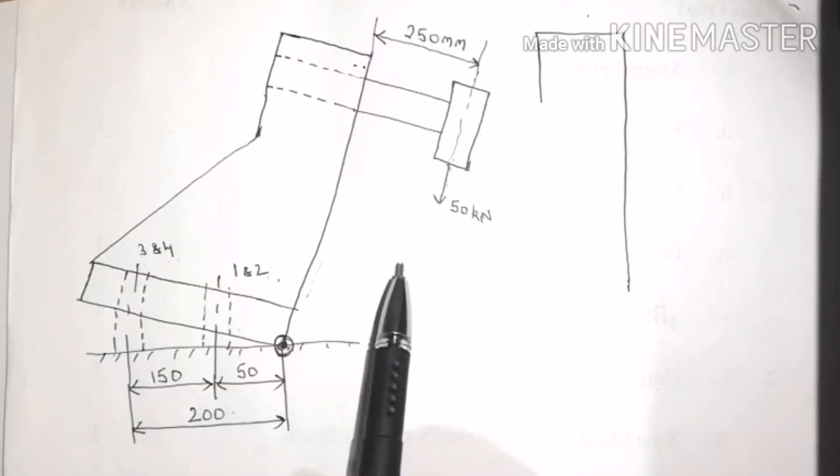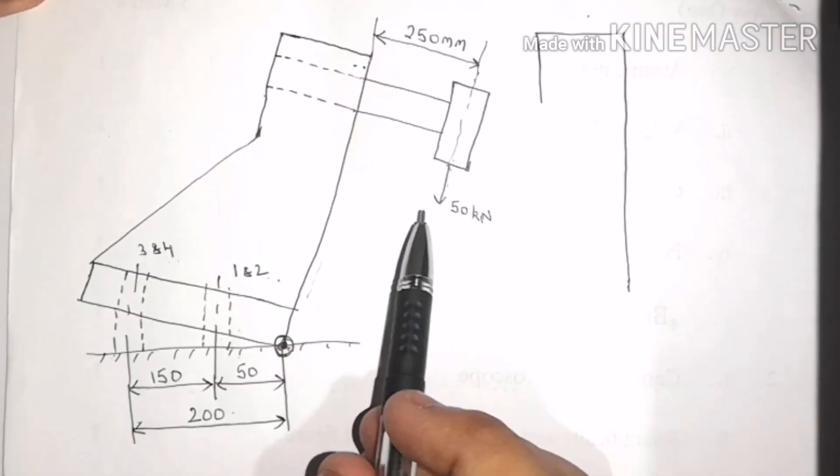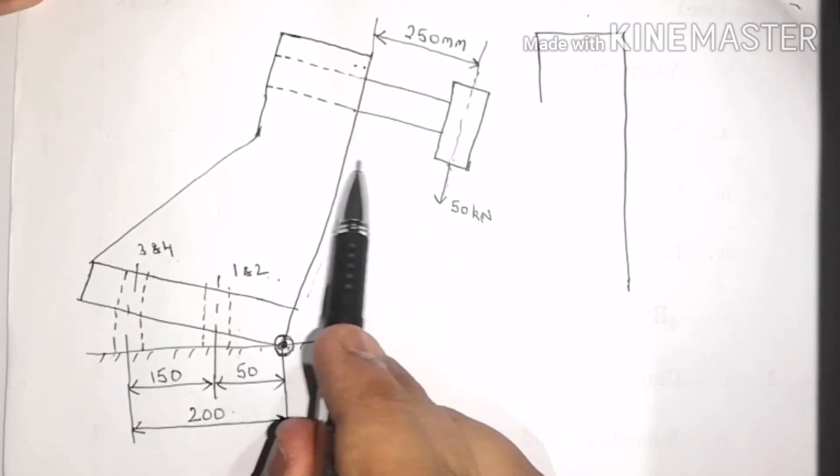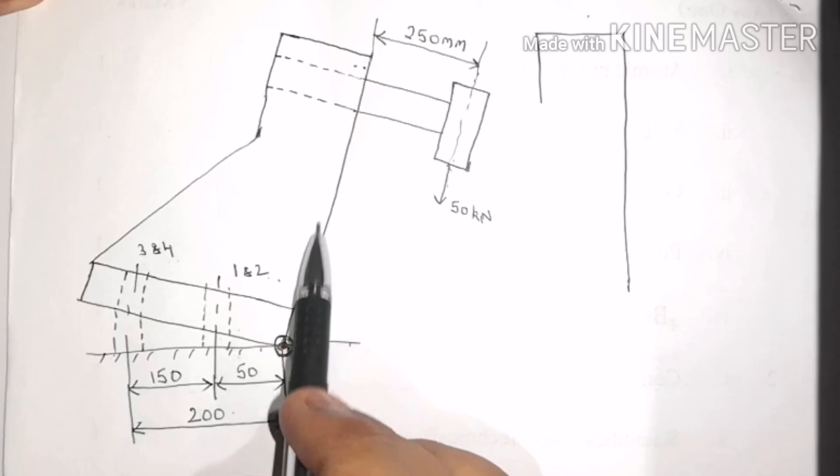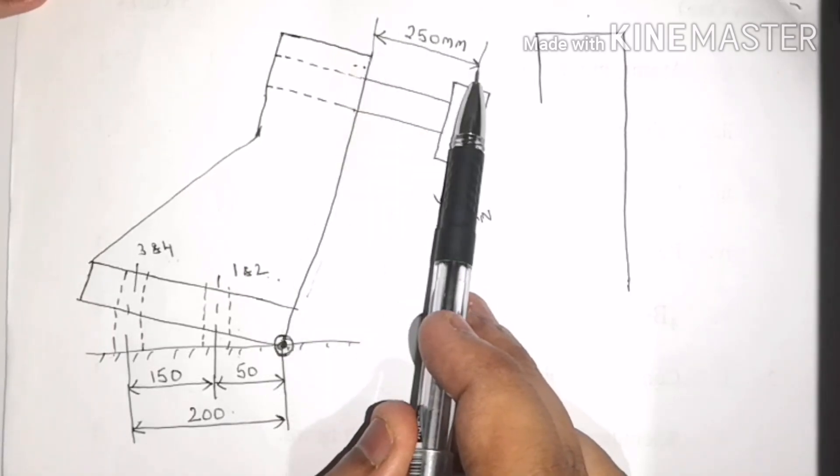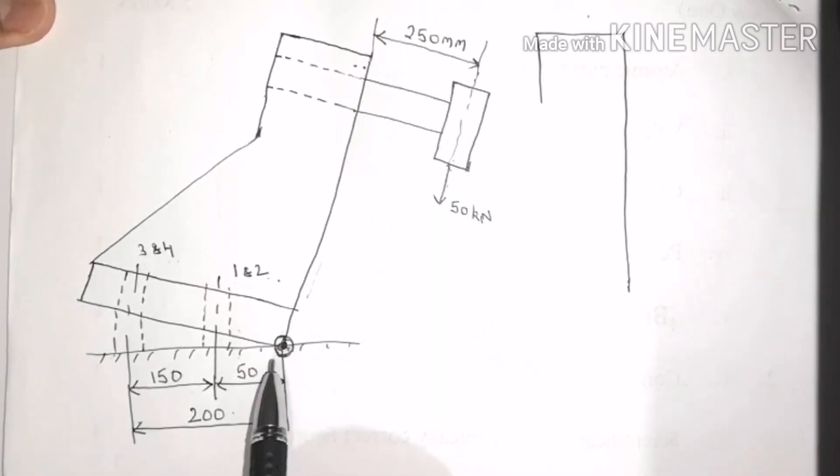From the figure, we can see that the distance between the point of application of the load and the point of tilting is given as 250 mm. Hence E = 250 mm. Now regarding the distances L1, L2, L3, and L4, these are the distances from the point of rotation to that particular bolt.